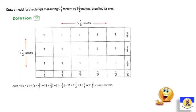The next: draw a model for a rectangle measuring 5 and a third meters by 3 and a half. Five is easy: 1, 2, 3, 4, 5. We count to 5. Then we make 3, and I make 5. So I have 3 here and 5 here. Now I have third and half remaining.